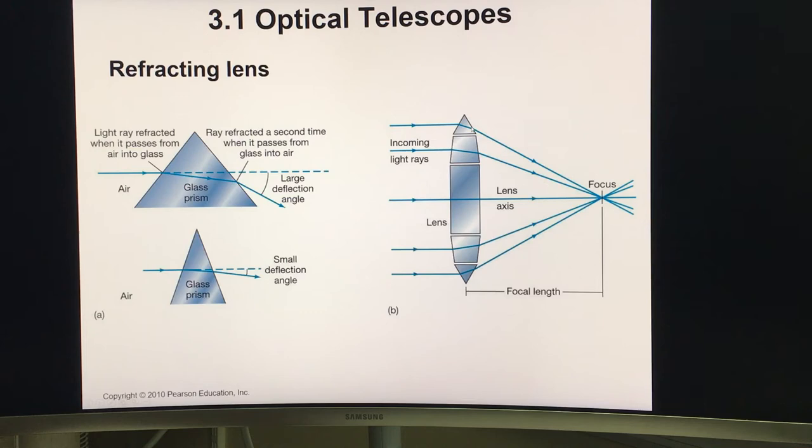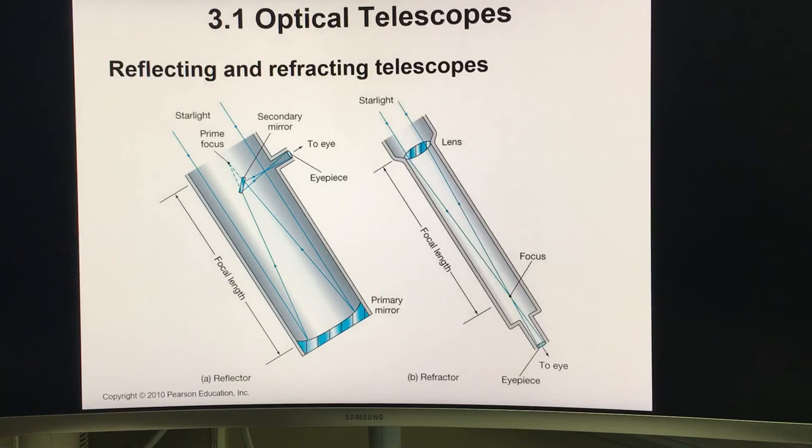The image will be formed over here. There are two different kinds of telescopes as I said before, based on reflecting and refracting telescopes. On the left hand side, this is a reflecting telescope based on mirrors.